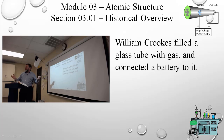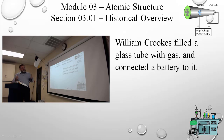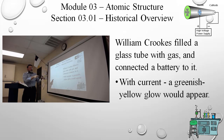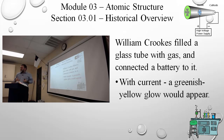What Crooks did is he took a cathode ray tube, filled it with gas, and connected a battery to it. This tube was known as a Crookes tube. The idea: take a tube, fill it with gas, hook a battery — negative and positive end — and see what happens. When the connection was made, he noticed that there was a greenish-yellow glow that appeared inside the tube.